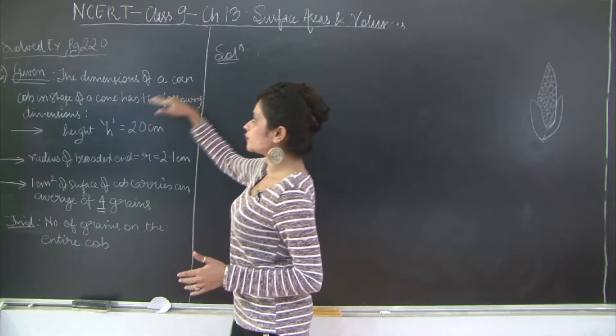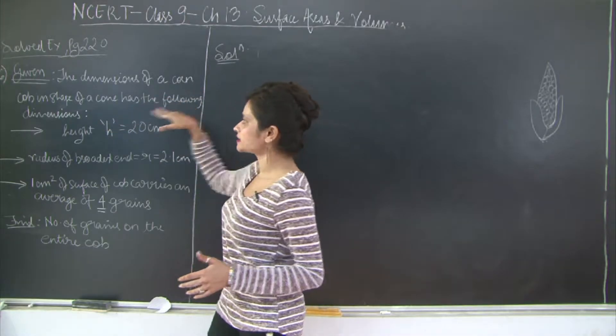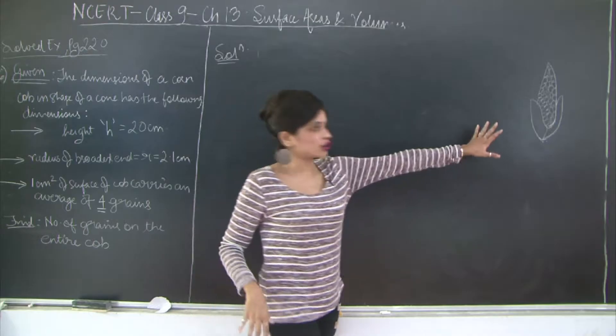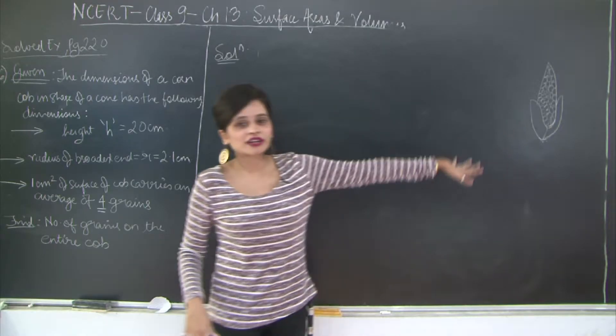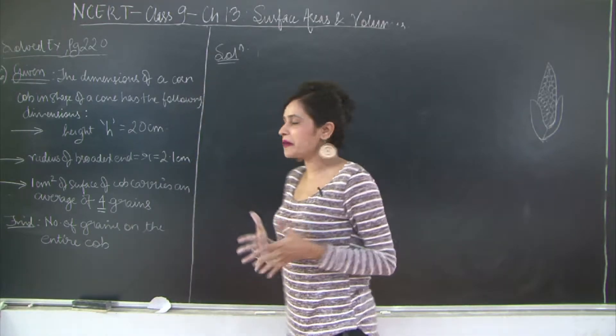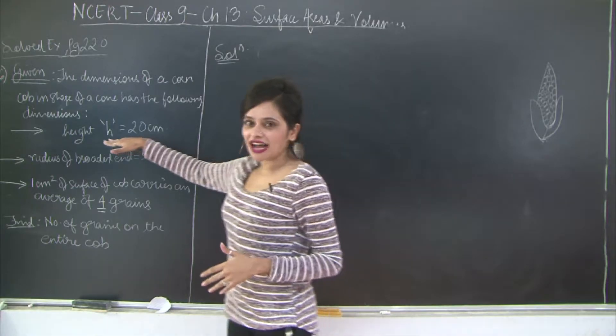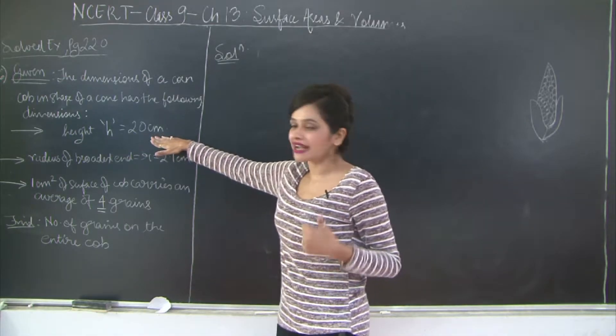It says that the dimensions of a corn cob in the shape of a cone has the following dimensions. So what we are talking about is a corn cob out here. Excuse me for my drawing, it's not that great but we are good in maths.